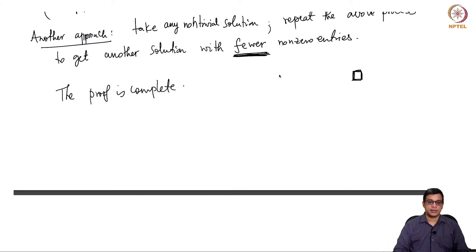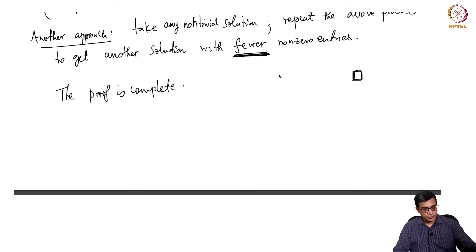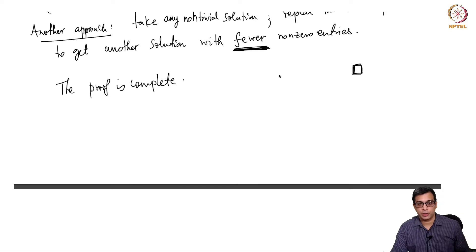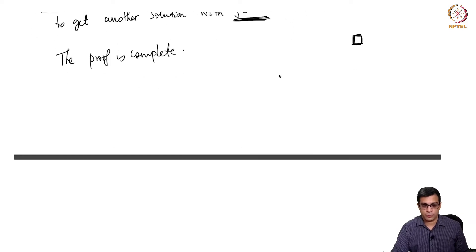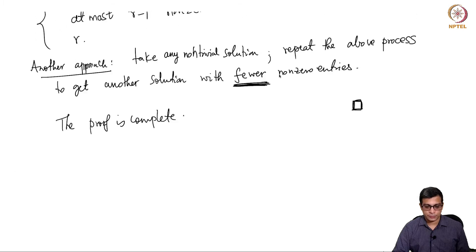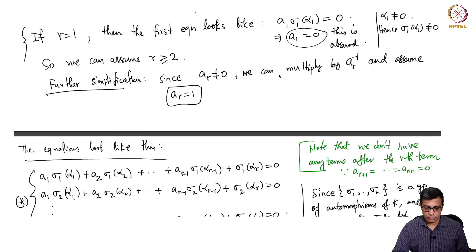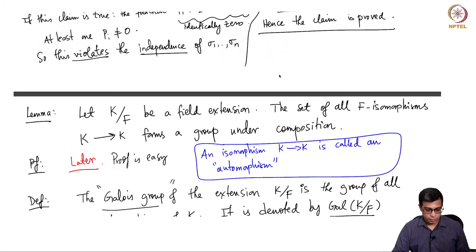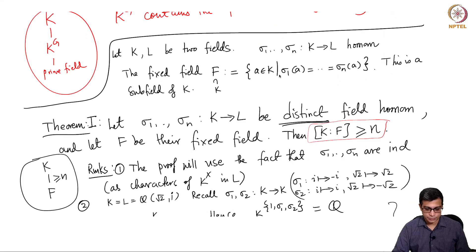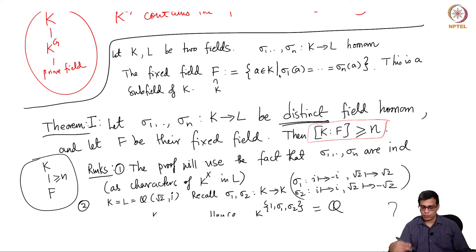Welcome back. In the last two videos we proved two important theorems about fixed fields, and now we are ready to start defining Galois extensions and study them in detail. To quickly recall, the first theorem says that if you have two fields and a bunch of distinct field homomorphisms, then the degree of K over the fixed field of those is at least the number of those homomorphisms.